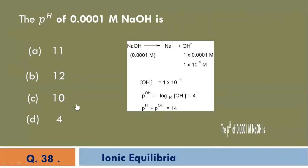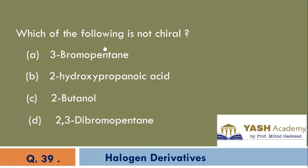The pH of 0.0001 molar NaOH is. C is the correct option.